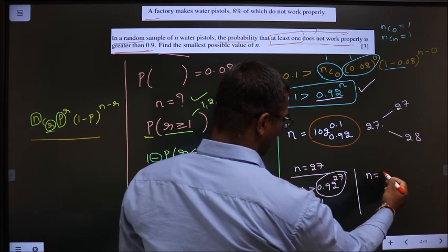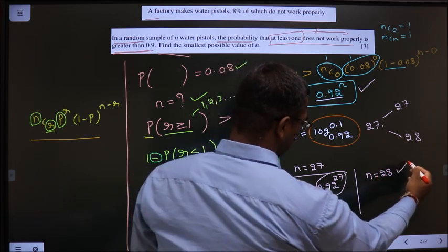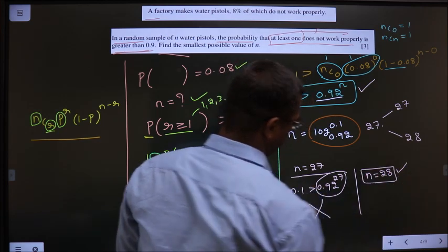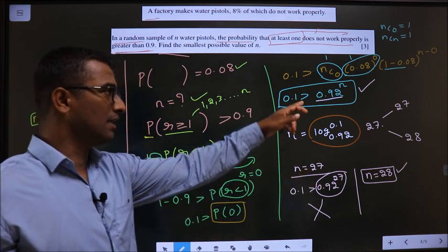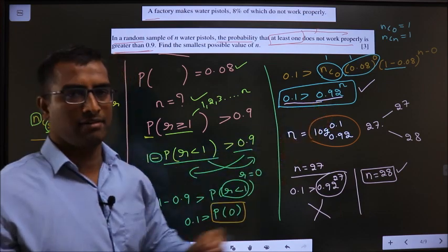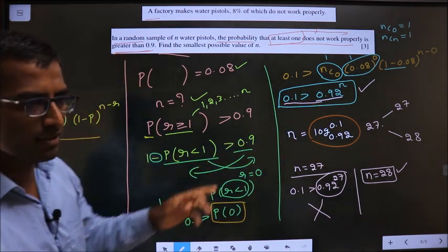If you have rejected this, so n equal to 28 is correct. So this is our answer. Is it clear? If you want to confirm, replace n equal to 28. And check this inequality. Clear with this?